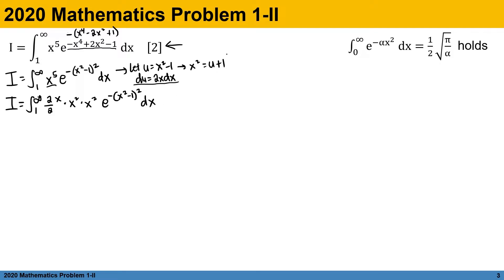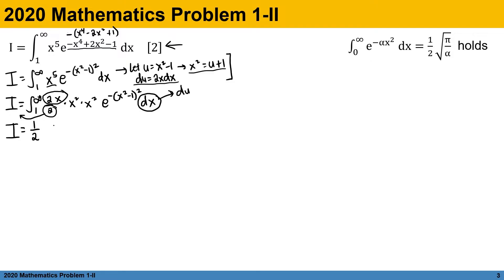Applying the substitution u equals x squared minus 1, and x squared equals u plus 1, we substitute u. The groups of 2x and dx can be combined as du, while the 2 in the denominator is extracted outside.